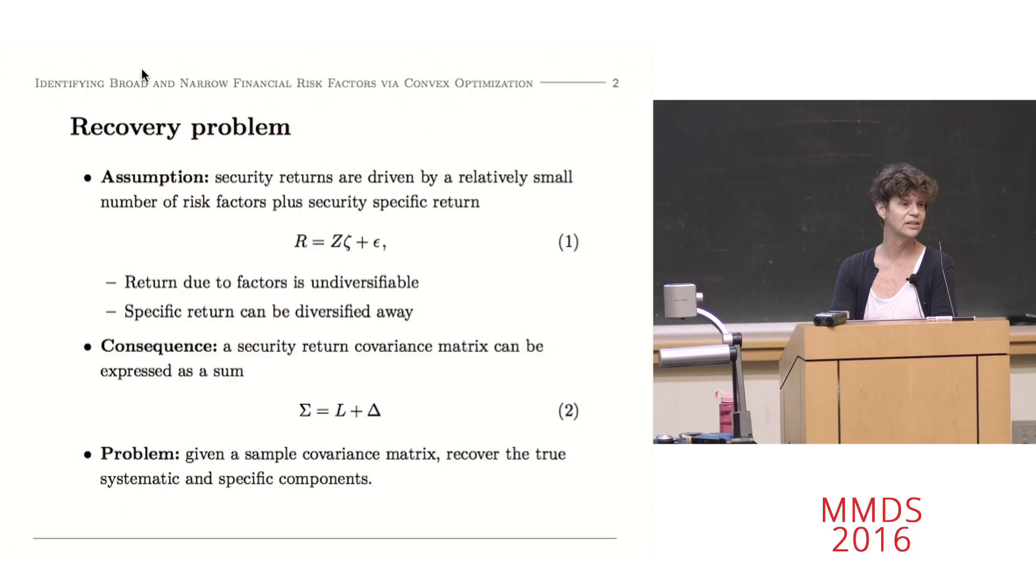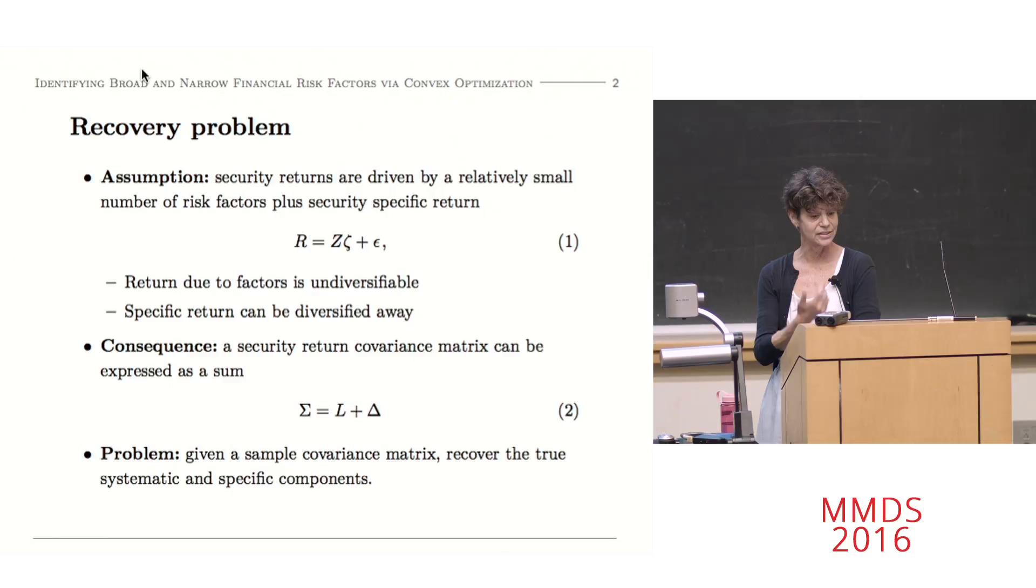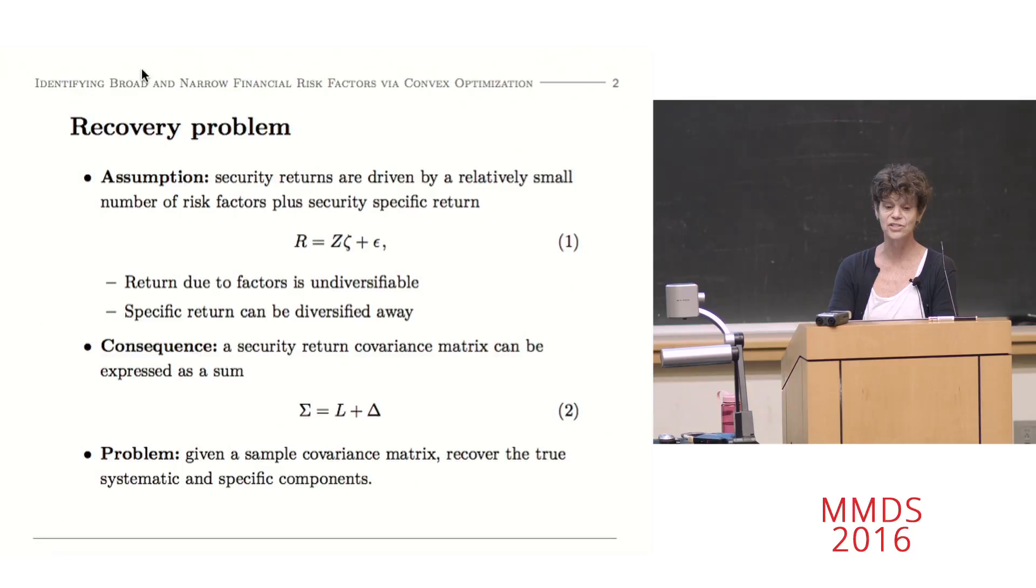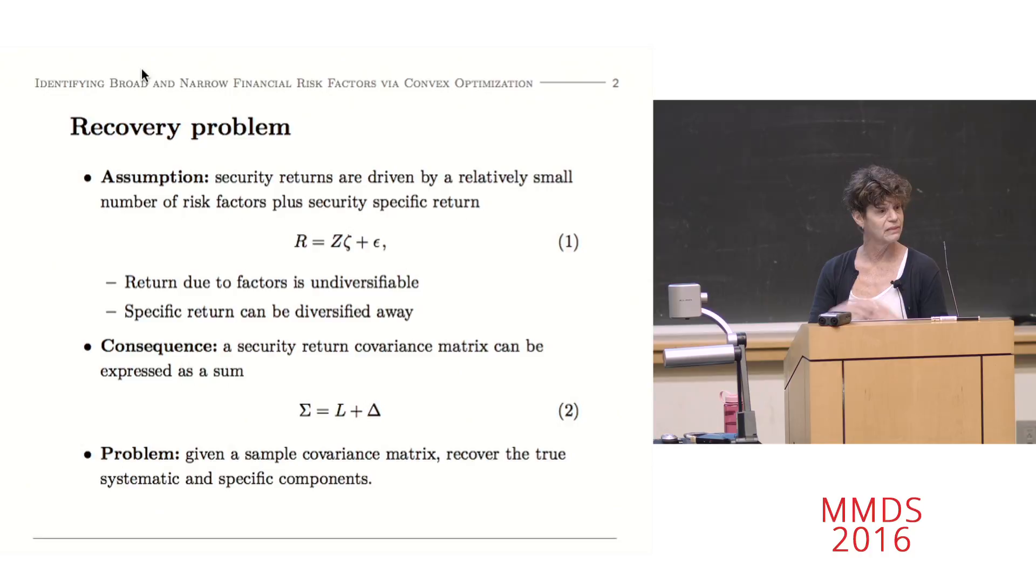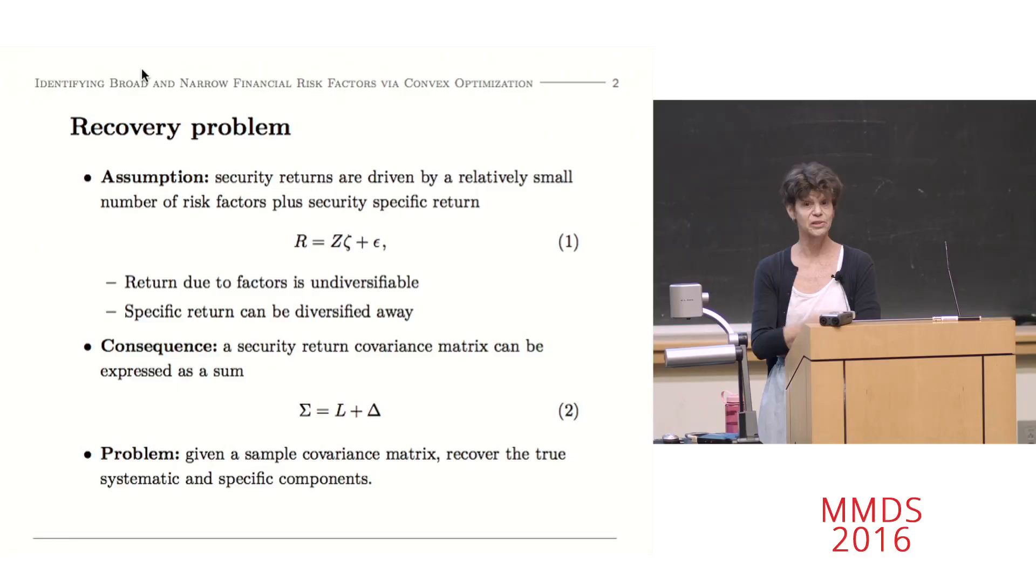Given those assumptions, and given an assumption of specific return being uncorrelated with common factor return, you get a very simple decomposition of the covariance matrix into L for low rank, and Delta for diagonal. This is way back in time, 1976. Now, why do we care about this? Well, from the perspective of a practitioner, a practitioner wants to understand what component of return can be diversified away. That's a very important thing to know if you're investing.